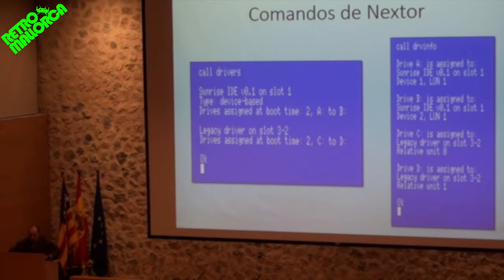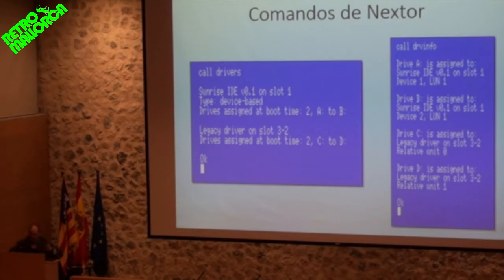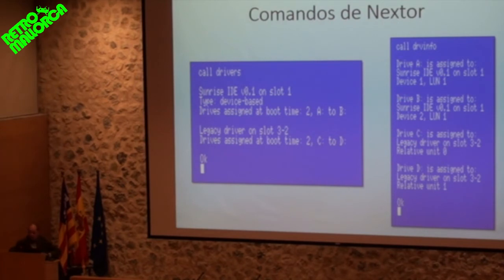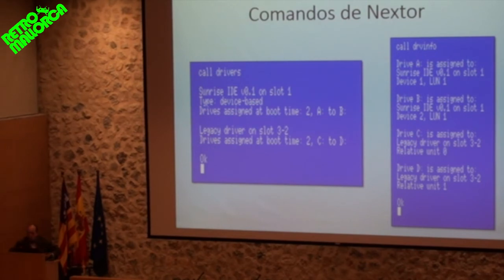On the right you can see another command that tells you which drive is assigned to which device. For example, in this typical boot configuration: drive A is assigned to the IDE controller in slot 1 — the slot where MSX cartridges connect — and it's in the first device. Drive B is the same but the second device. Drive C is on an MSX-DOS kernel — I have no idea what type of device since MSX-DOS kernels have no way of knowing the device type — mapped to device 0 of that controller. This is simply the basic automatic boot configuration.